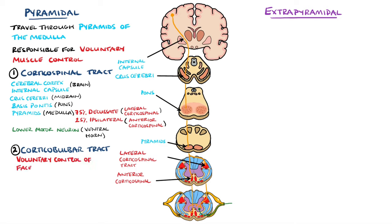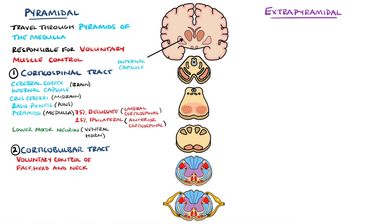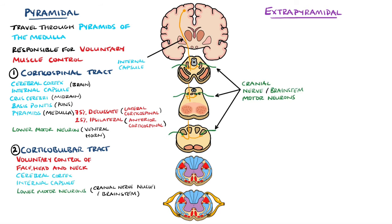As for the corticobulbar tract, this is the tract responsible for the voluntary control of the head, the face, and the neck. Similarly to the corticospinal tract, they originate from the cerebral cortex and pass through the internal capsule. However, rather than descend into the spinal cord, these neurons have their axons synapsing to the lower motor neurons in the brainstem, specifically onto the cranial nerve nuclei. A crucial difference is that these neurons innervate bilaterally in most instances; therefore, neurons from one side provide motor function for both sides of the face.